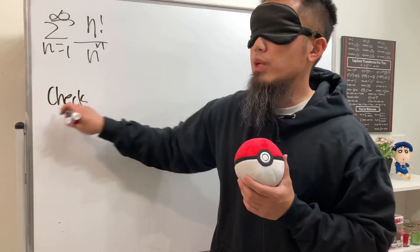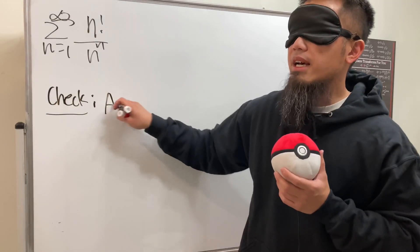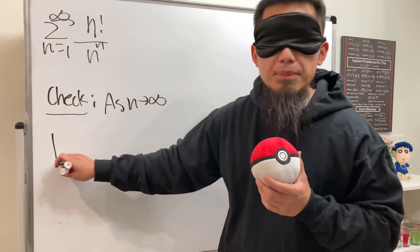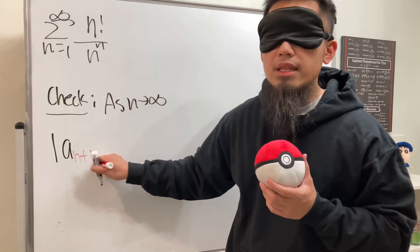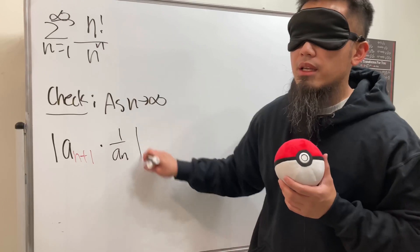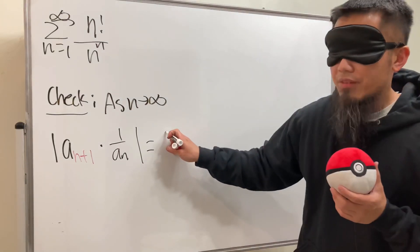Okay, so here we go. What we do is we are going to check. We have to take the limit as n goes to infinity, and right here we have to do absolute value of a_{n+1} over a_n, but it's the same as multiplied by 1 over a_n.